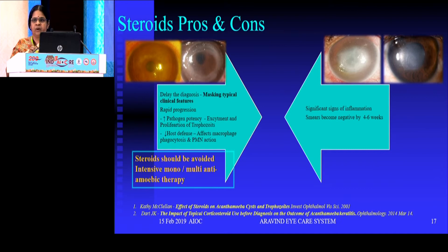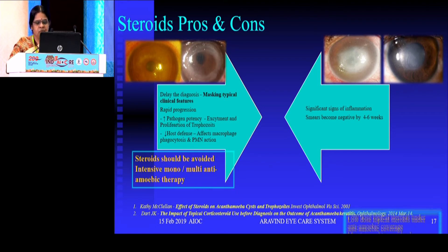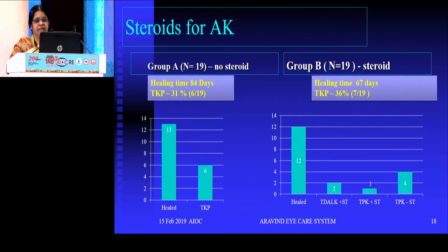Another problem with prolonged infection is that inflammation becomes a main concern, so we may need to consider steroids. However, in Acanthamoeba keratitis, steroids should not be given before diagnosis or before controlling the infection — that will be detrimental. In our study, when we repeated cultures after four to six weeks and they became negative, we could slowly introduce low-dose steroids for the predominantly inflammatory phase. Later, we stop the steroid and continue anti-amoebic agents for a longer duration.